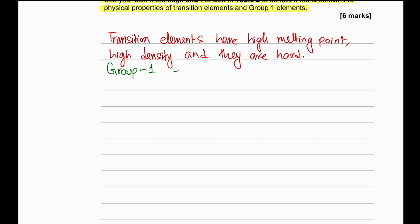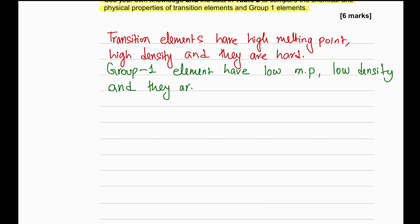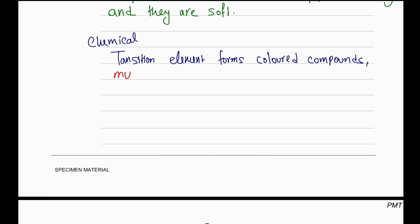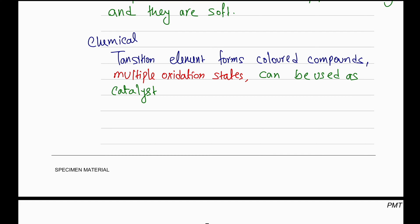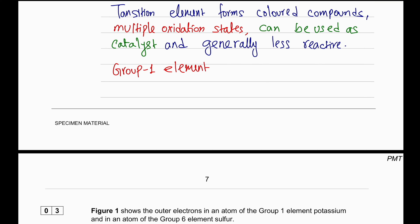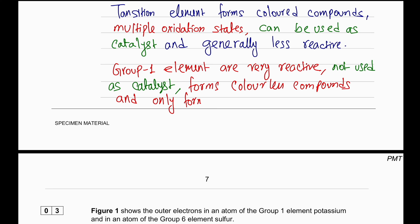For chemical properties: transition elements are usually less reactive in water, they can be used as catalysts, they have multiple oxidation states, and they form colored compounds. Group 1 elements are very reactive — for example, sodium and caesium must be stored under oil. Group 1 elements cannot be used as catalysts, their compounds are white in color, and they only form a +1 positive ion.